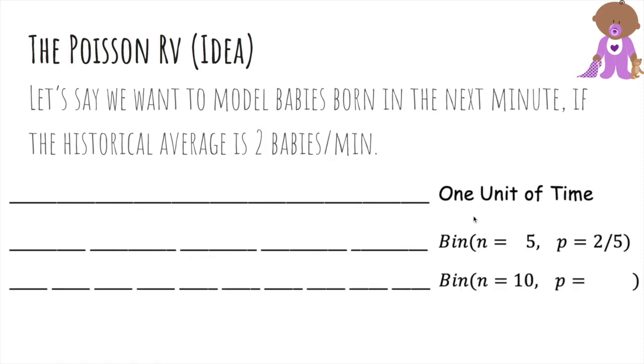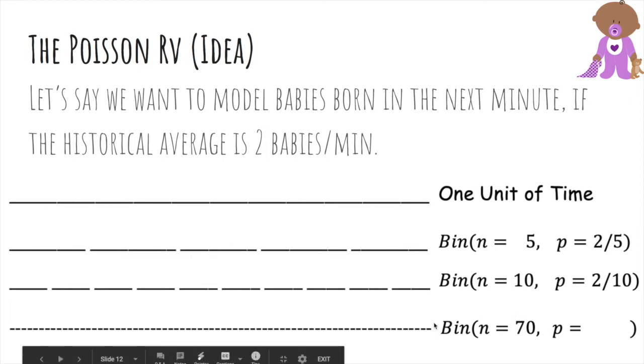But let's simulate time, so let's break it into smaller chunks. If n is 10, and at each one, either babies born or not, then our p would actually go down to 2 tenths, so that our average would be maintained at 2. And then let's say n is 70, so we break it into even tinier intervals, and then p would be 2 over 70 to accommodate the average to be 2.